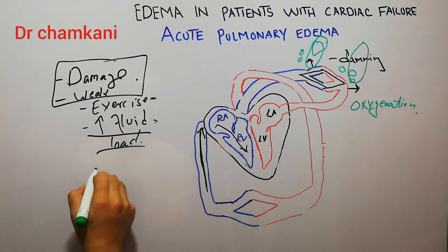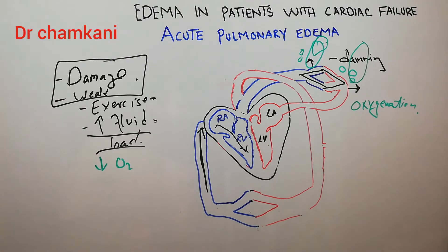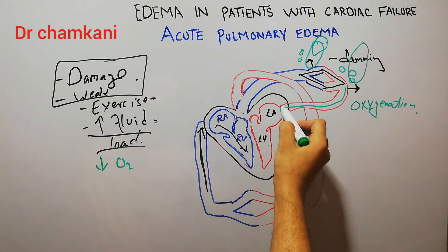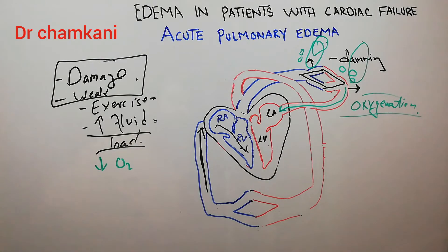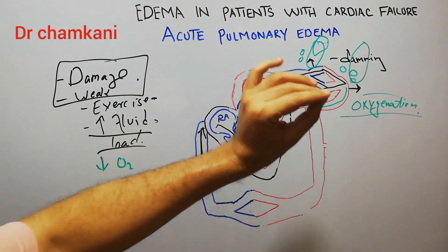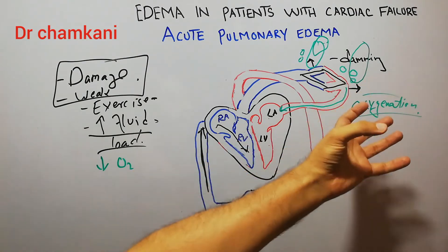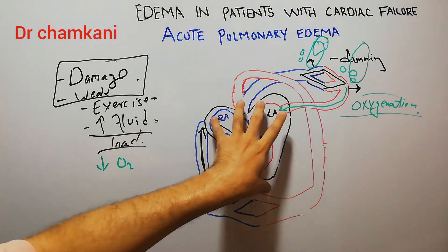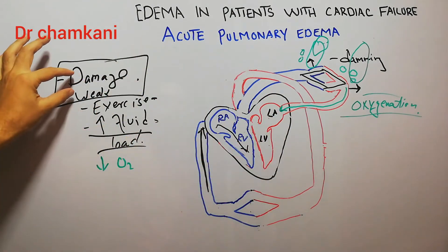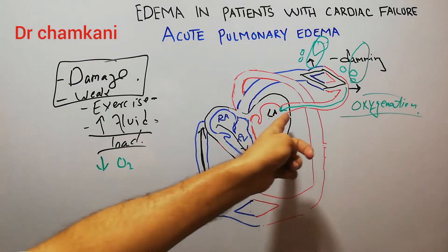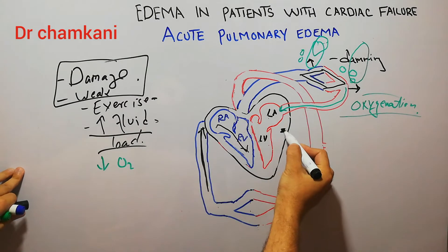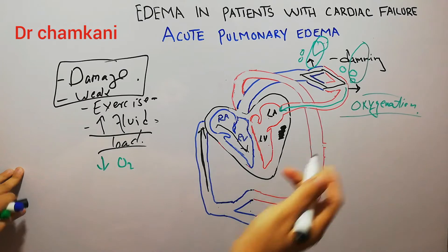This leads to decreased oxygenation of the blood. The blood that starts returning to the heart is not fully oxygenated because there is collection of fluid in the lung, and that fluid is not allowing proper oxygenation. When that incompletely oxygenated blood returns to the heart, the heart muscle — which is already weak and damaged — is now receiving improperly oxygenated blood.